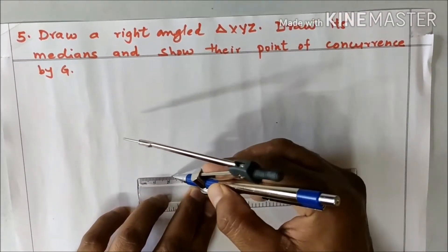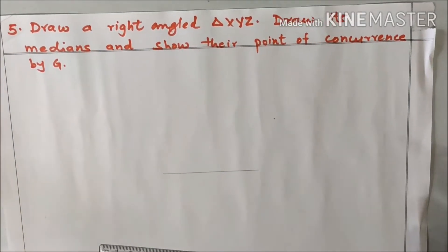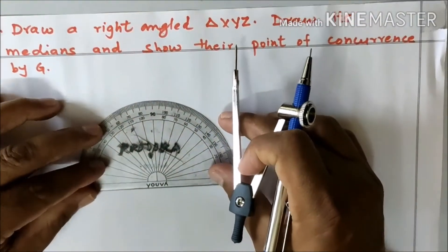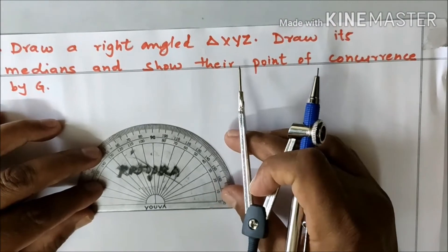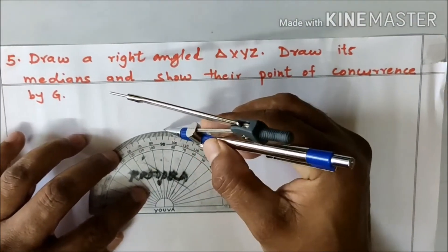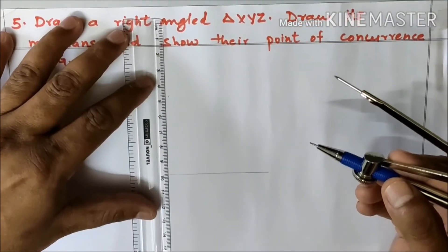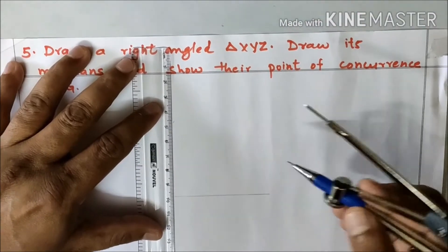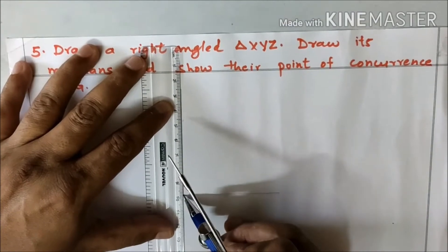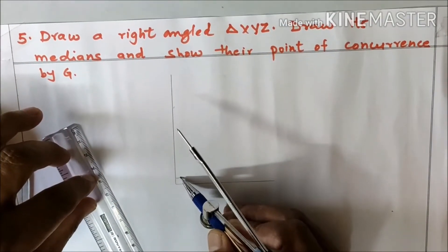First we will make a base of any length for this triangle. Now we will measure an angle of 90 degrees at one of the corners of this segment. Mark your 90-degree angle. It is up to you how big a size you want. This angle is 90 degrees.